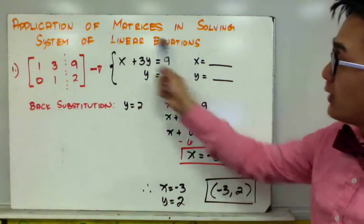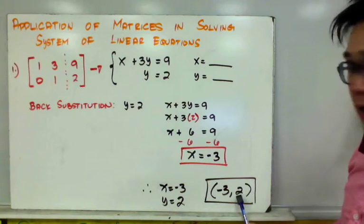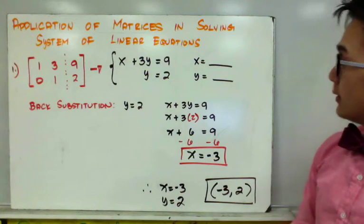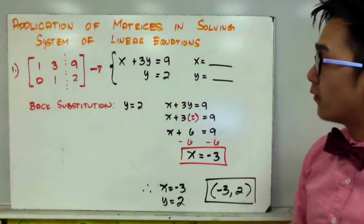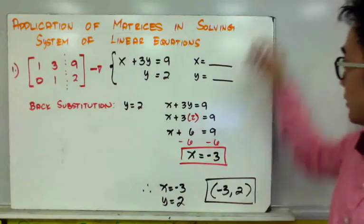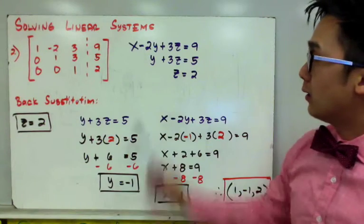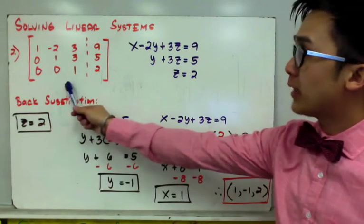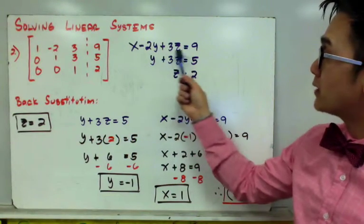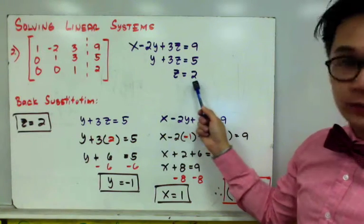So the solution of our linear system using an augmented matrix is negative 3 and positive 2 — this is the point of intersection of our linear system. Now let's look at another example, but this time using three variables. From our augmented matrix, converting it into a linear system gives us: x minus 2y plus 3z is equal to 9, y plus 3z is equal to 5, and z is equal to 2.